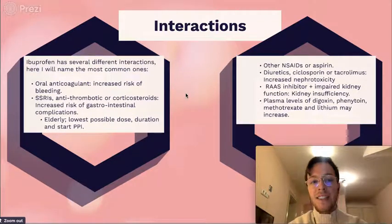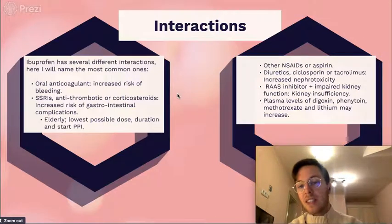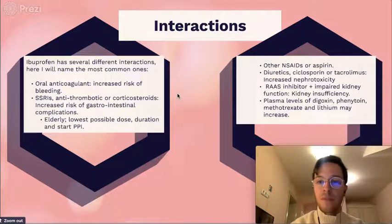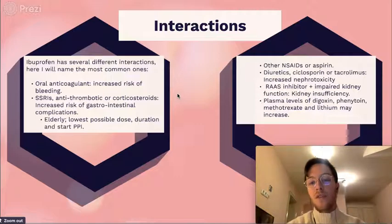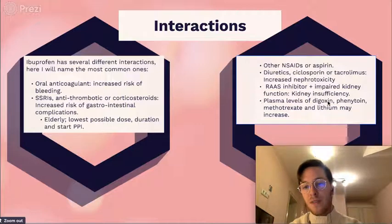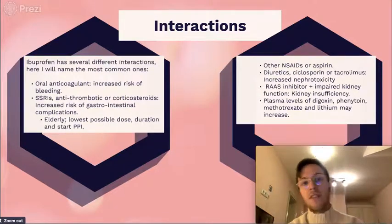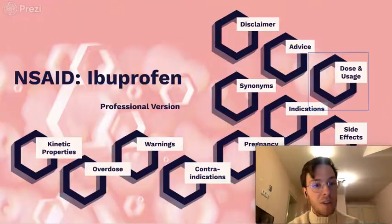You cannot combine ibuprofen with other NSAIDs. Also, when combined with diuretics, cyclosporins, or tacrolimus, it may lead to increased nephrotoxicity. When combined with a RAS inhibitor in a patient with impaired kidney function, it can lead to even worse kidney insufficiency. Lastly, the plasma levels of digoxin, phenytoin, methotrexate, and lithium may increase when combined with ibuprofen. Please take those into mind if prescribing ibuprofen for a patient with any of these co-medications.